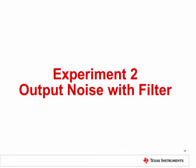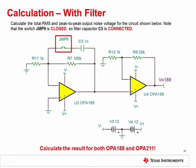In Experiment 2, we'll determine the total output voltage noise in the circuit with a filter capacitor in the feedback network. Perform another total noise calculation on the circuit shown; this time a filter capacitor is added to the feedback network of the first amplifier stage. This capacitor will reduce the circuit's noise bandwidth, so the overall noise performance will be significantly improved. As before, do the calculations with both the OPA188 and OPA211.